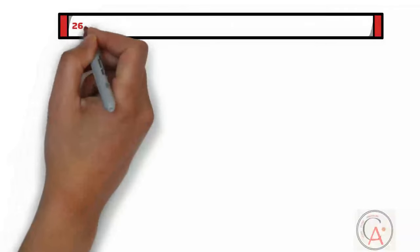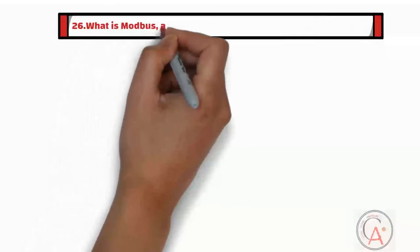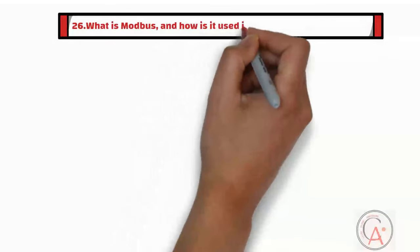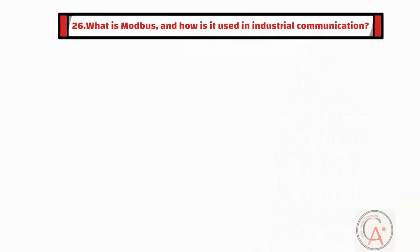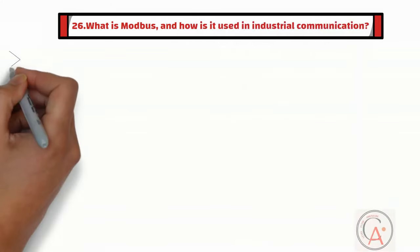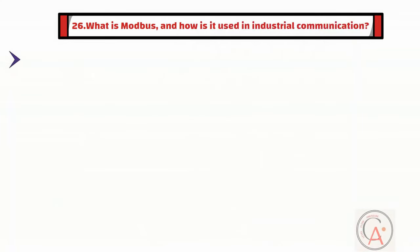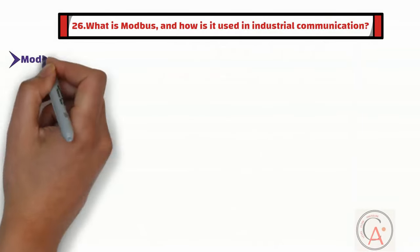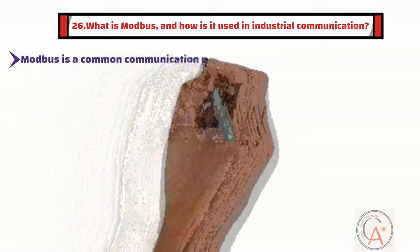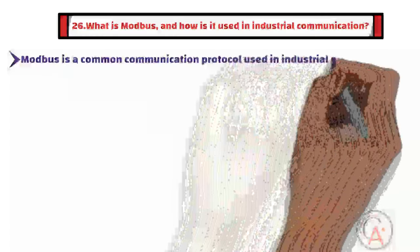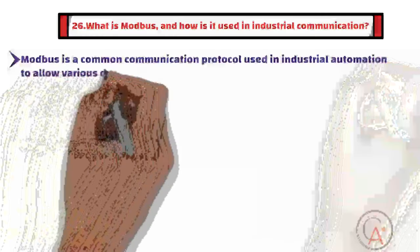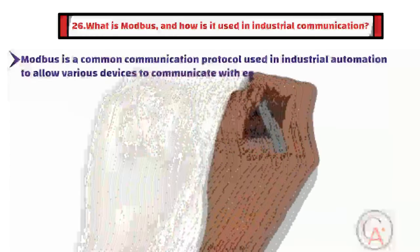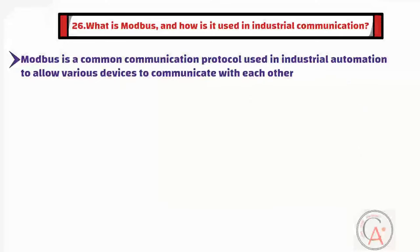The twenty-sixth question is: what is Modbus and how is it used in industrial communication? Modbus is a common communication protocol used in industrial automation to allow various devices to communicate with each other. It is often used for data exchange between PLCs and other equipment.